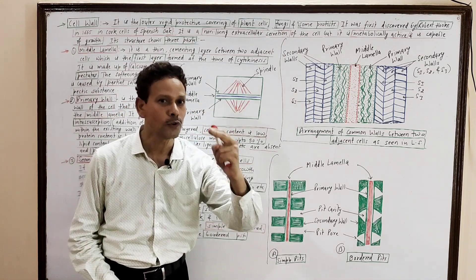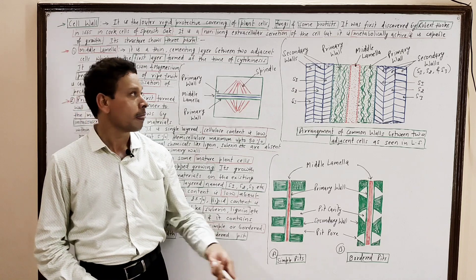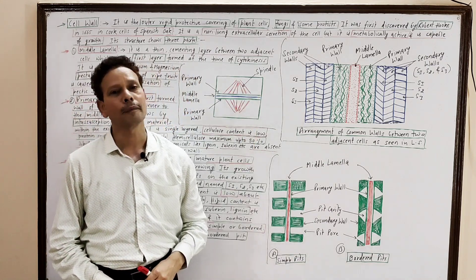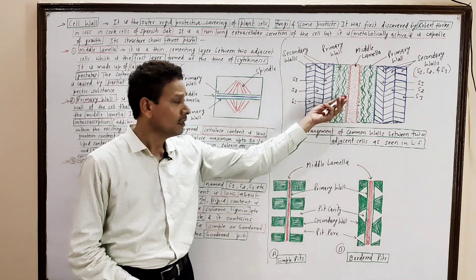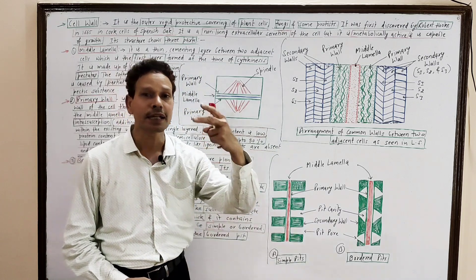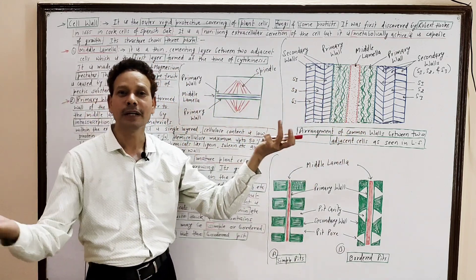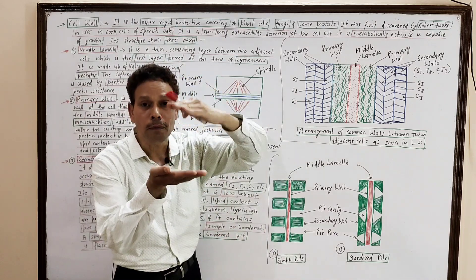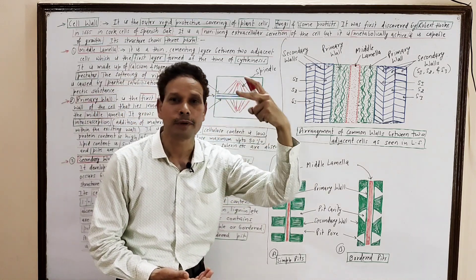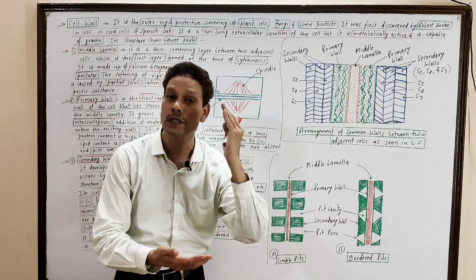To summarize: the cell wall is an outer, hard, rigid, protective covering — a characteristic of plant cells, fungal cells, and some protist cells. Its discovery credit goes to Robert Hooke in 1665, when he studied the cork cells of Spanish oak. The cell wall is metabolically active and capable to grow. The middle lamella is the first formed layer between two adjacent plant cells, developing at the time of cytokinesis. It is made up of calcium and magnesium pectates, and that pectate substance gets solubilized at the time of ripening of fruits, causing softening of the fruit wall.